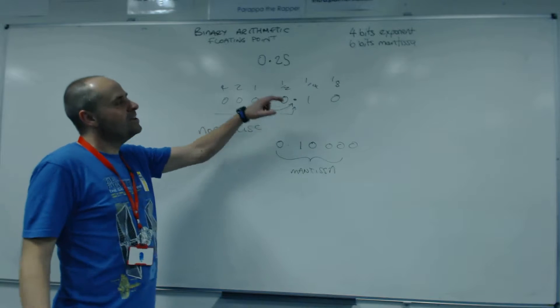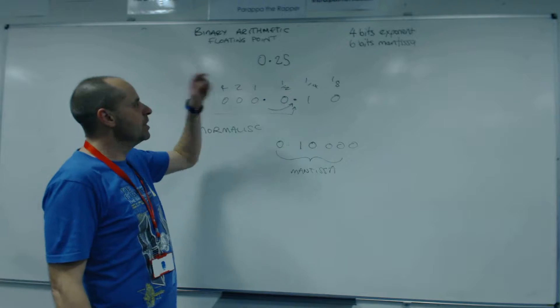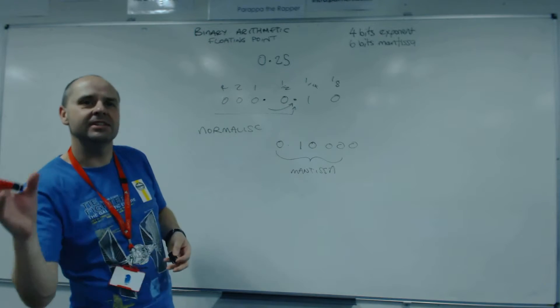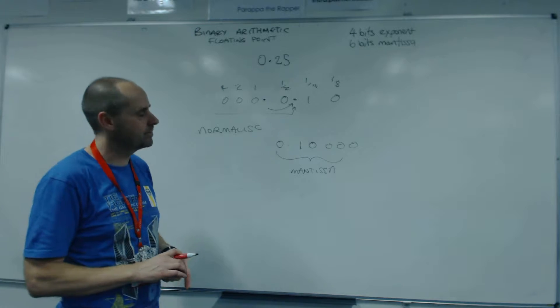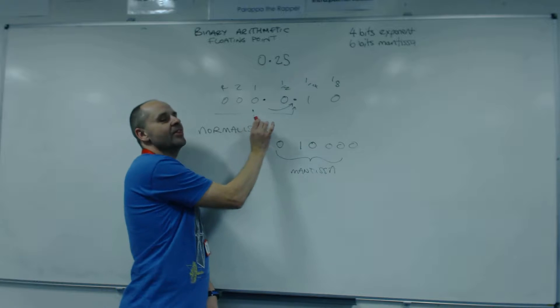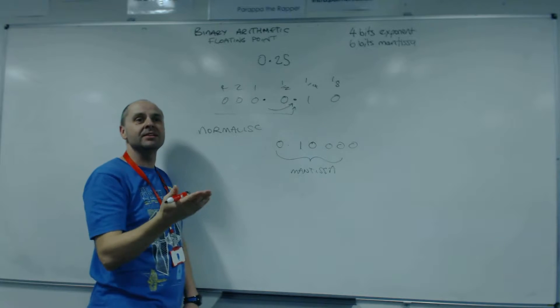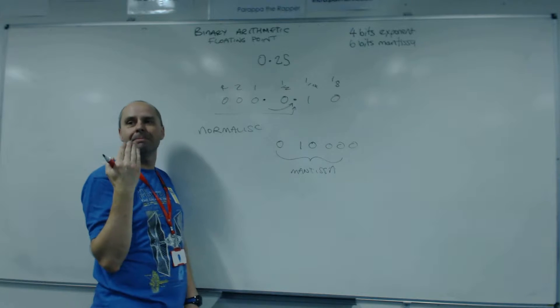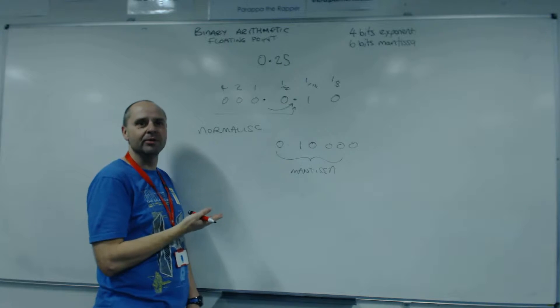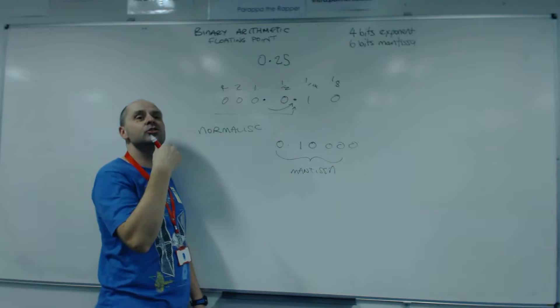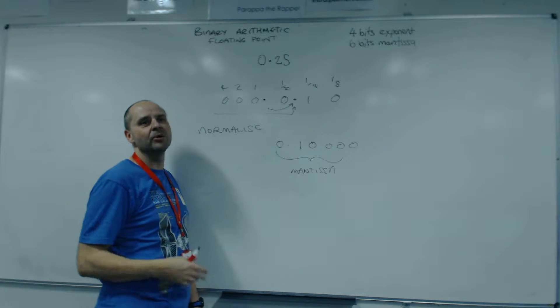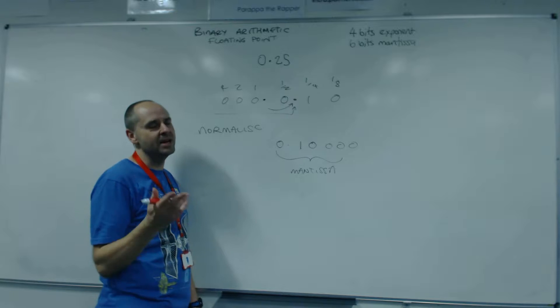Now, when we did this, we moved the binary point one position. So the exponent is going to be one. But we need to know whether it's negative or positive one. This number, because we went that way, we have actually made this number one position bigger. So when we read this back, and we want to know what number it is, we need to make it smaller. If we're going to make it smaller, we make the exponent negative. So the exponent is going to be negative one.